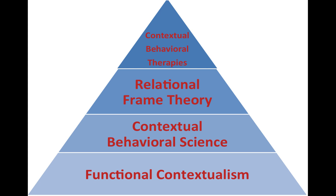First, I'd like to situate relational frame theory in a larger context. If you look at this pyramid, you can see that RFT is only a subcategory of something bigger, which we call contextual behavioral science or CBS. Contextual behavioral science is defined as a holistic branch of behaviorism that aims to predict and influence behavior using principles and analysis that are high in precision, scope, and depth. In simple terms, this science is interested in understanding and influencing behaviors through principles that are precisely defined, applied to a wide range of phenomena, and consistent with other levels of analysis such as biochemistry.